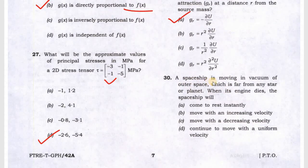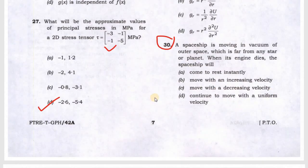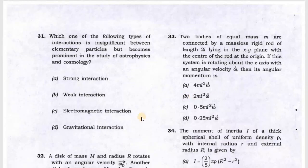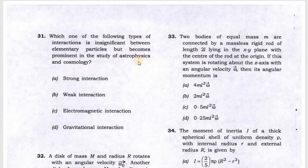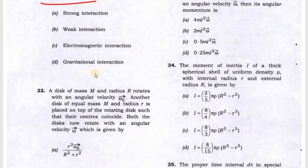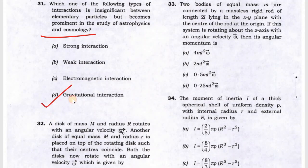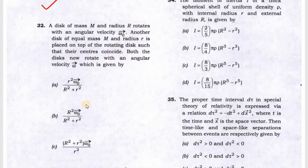Question 30: a spaceship is moving in a vacuum in outer space far from any planet. Which one, if the engine dies, then it is moving with constant velocity. D option will be correct. Next, which one of the following types of interaction is insignificant among elementary particles but becomes prominent in the study of astrophysics? This is gravity interaction.